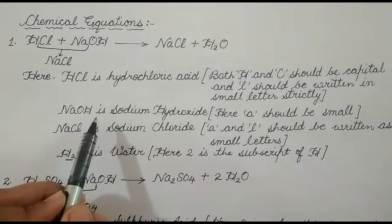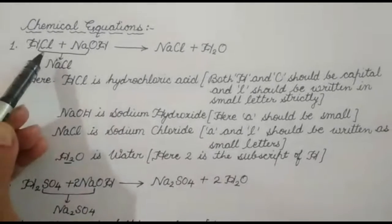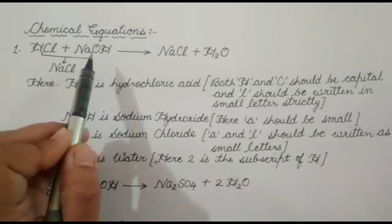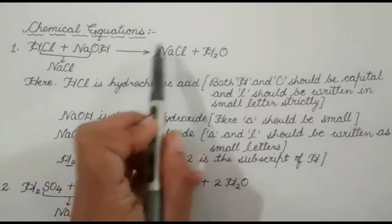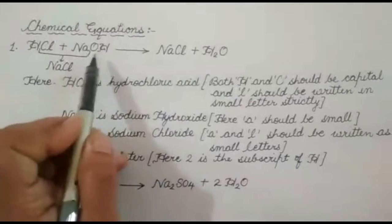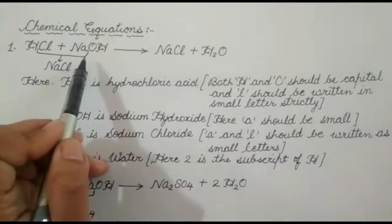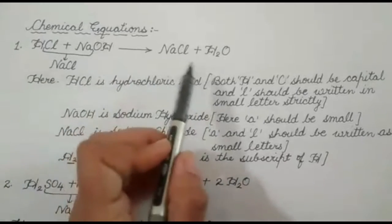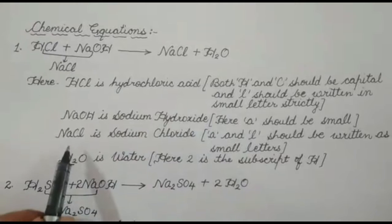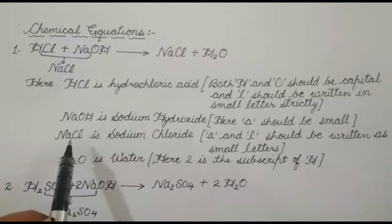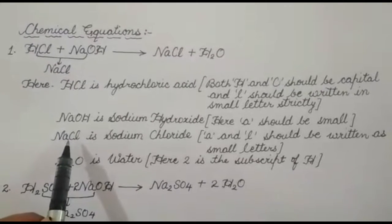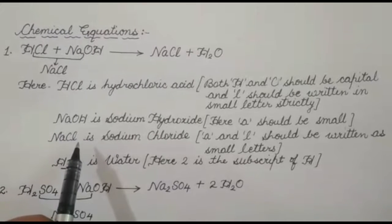The compounds that react with each other are known as reactants, and the compounds that are formed are known as products. Here, hydrochloric acid HCl and sodium hydroxide are the reactants. When they react with each other, the compounds formed are sodium chloride and water. For sodium chloride, N should be capital, A should be small, and for chloride, C should be capital and L should be small.